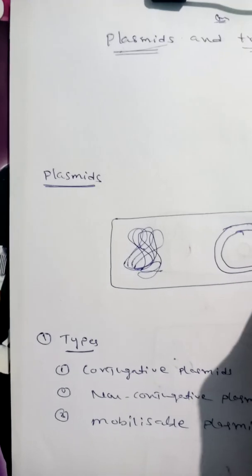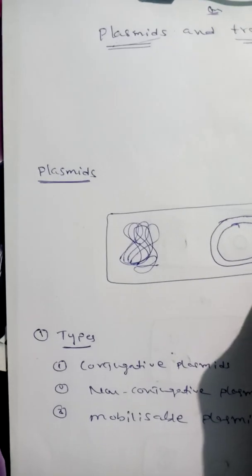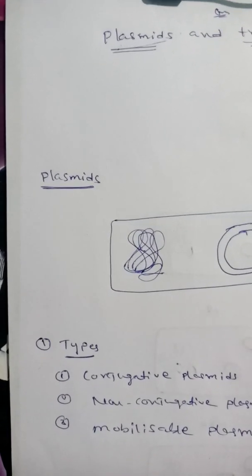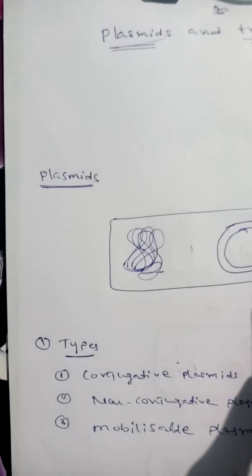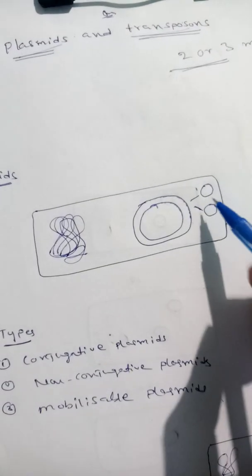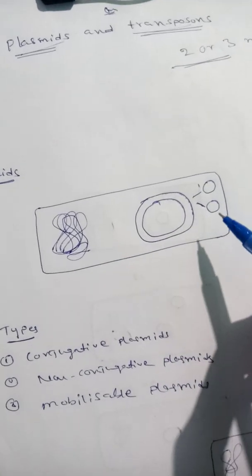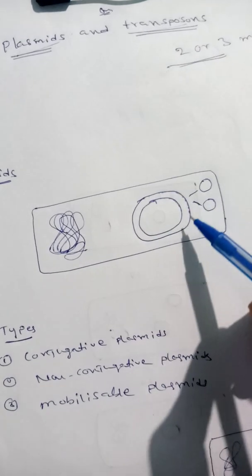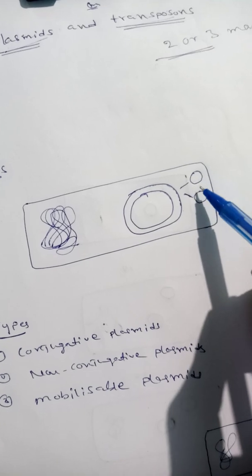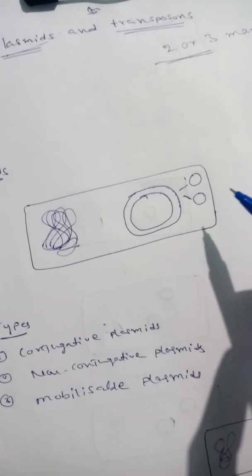From one plasmid, two plasmids are generated — it replicates within the cells and produces more plasmid copies. This process is called DNA replication. Plasmid DNA replication takes place within the cells and produces other plasmid DNA copies.